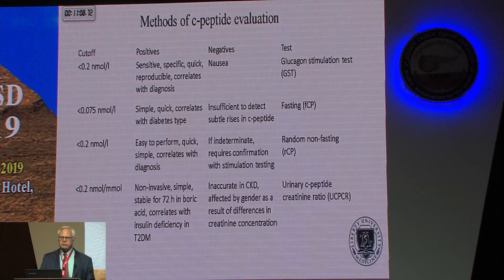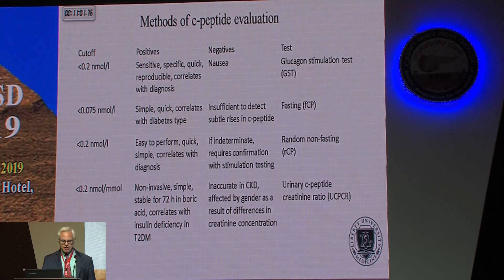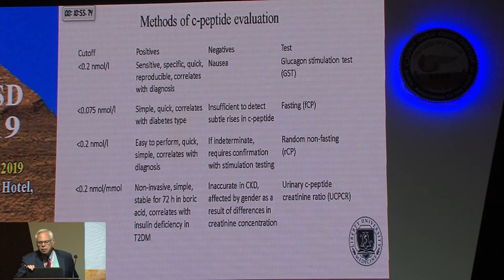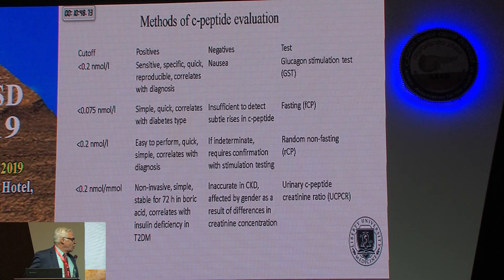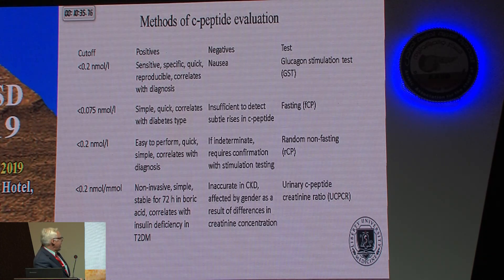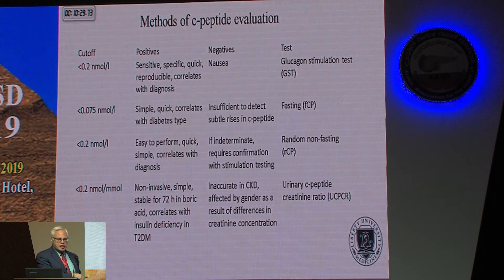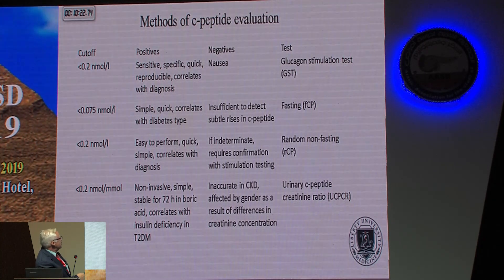When you check C-peptide levels, you're generally looking to see if there's a lack of C-peptide, which is associated with lack of insulin. The most common way to do it is a random or non-fasting C-peptide level. A random or non-fasting one is easy to perform — you don't have to worry about doing a special diet. If it's positive, it's very helpful. If it's indeterminate, the best provocative test is the glucagon-stimulated value, which is probably the most standard of care.